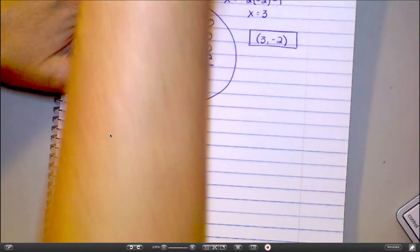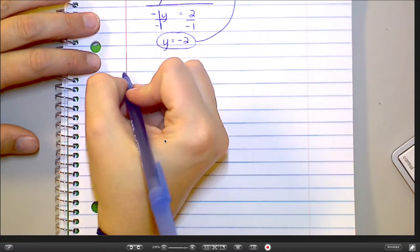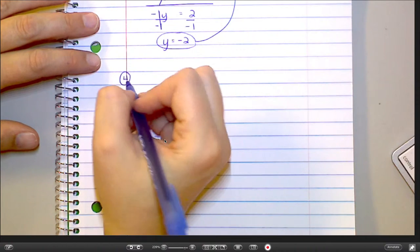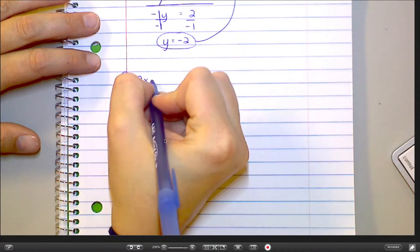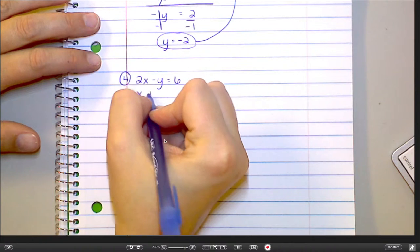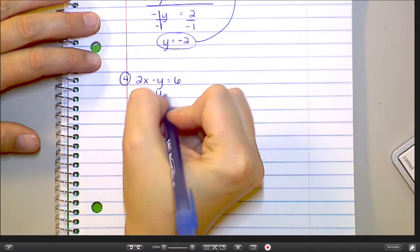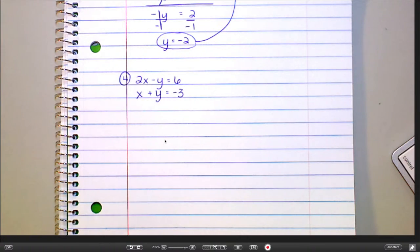Take a look at number 4. 2x minus y equals 6, and x plus y equals negative 3. A lot of different ways you could go on this one. Somebody tell me which variable you got by itself. The y in the second equation.